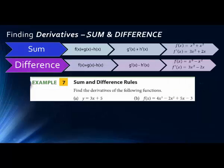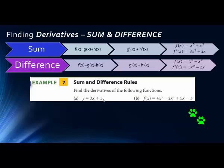The last thing we'll look at is finding derivatives for a sum and a difference. Pause and take the derivative of each part of each problem. In problem A we're adding two terms: 3x and 5. The derivative will be the derivative of 3x plus the derivative of 5. The derivative of 3x — the exponent is 1, bring it down, subtract 1 — gives 3 times x to the 0, which equals 3. The derivative of the constant 5 is 0.